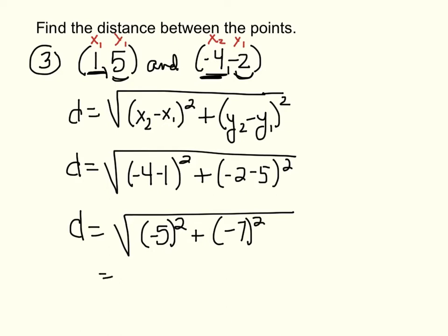Negative 5 squared is positive 25. Negative 7 squared is 49. 25 plus 49 is 74. And the square root of 74 gives us approximately, we're going to round to the nearest tenth, 8.6.